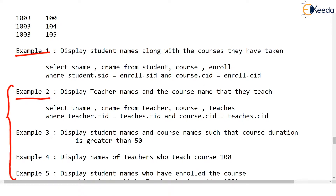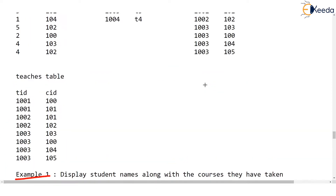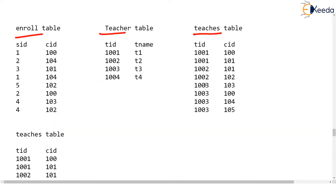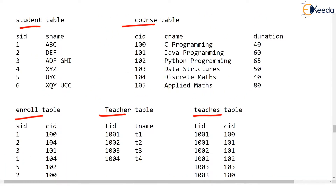Example two is: display teacher names and the course names that they teach. So we just want t_name (teacher name) and c_name (course name). Now check how many tables will be involved. Teacher name is in the teacher table, so the teacher table will be involved in the query.